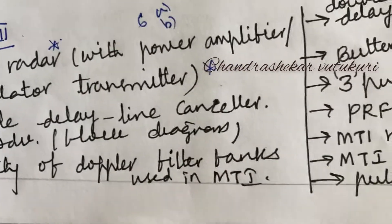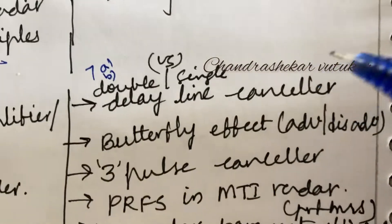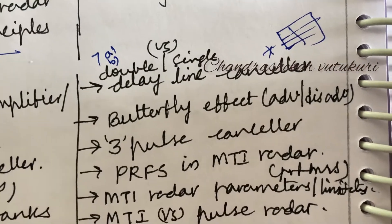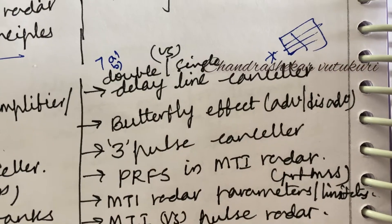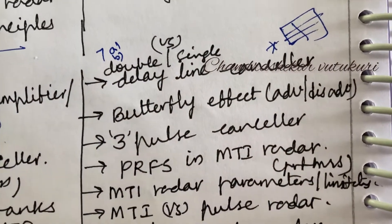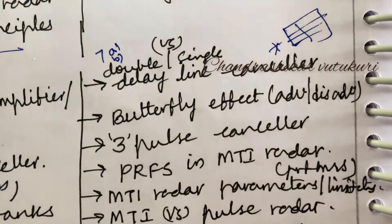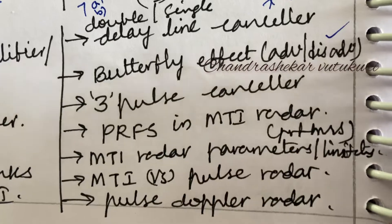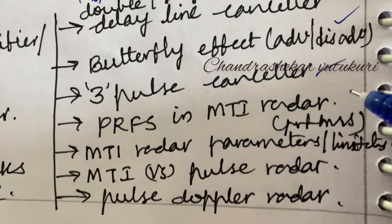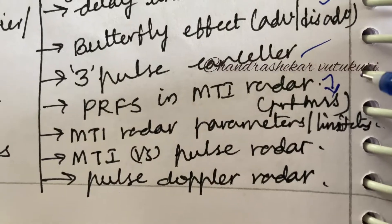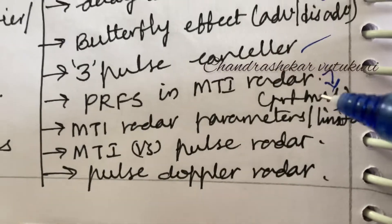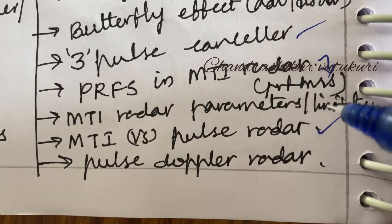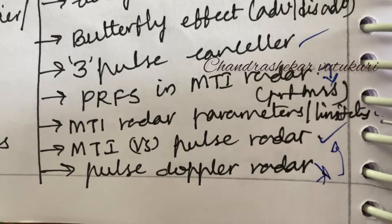The double delay line canceller versus single delay line — the differences need to be made in a tabular column. I hope you have gone through my channel on how to write a theory paper and a mathematical paper and how to score better marks. The butterfly effect disadvantage with a short question, three-pulse canceller with a short question, PRF in MTI radar and the problems related to it may be important. MTI radar parameters and limitations, MTI versus pulse radar — a very important short question. Pulse doppler radar related to MTI is also a top-most question.